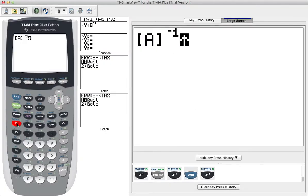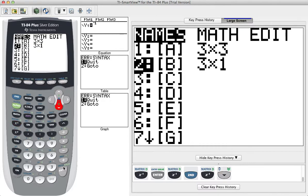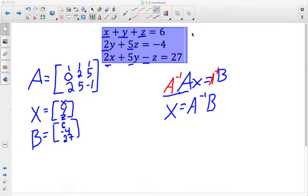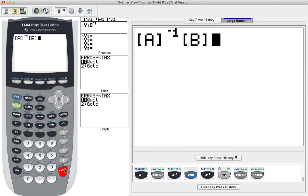Select my matrix menu again, select B, and now I have inverse of A times B, just like over here. Hit enter on my calculator and now it gives me this: 5, 3, negative 2.